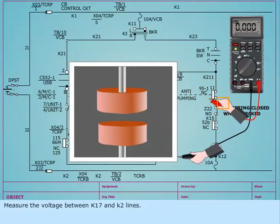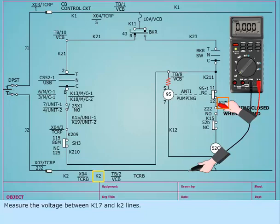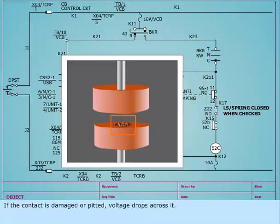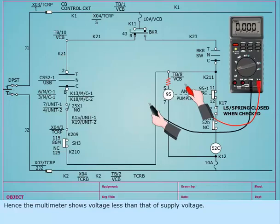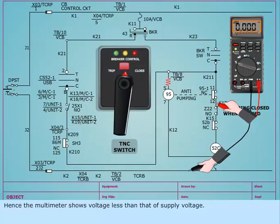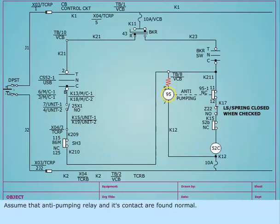Measure the voltage between K17 and K2 lines. If the contact is damaged or pitted, voltage drops across it. Hence the multimeter shows voltage less than that of supply voltage. Assume that the anti-pumping relay and its contact are found normal.